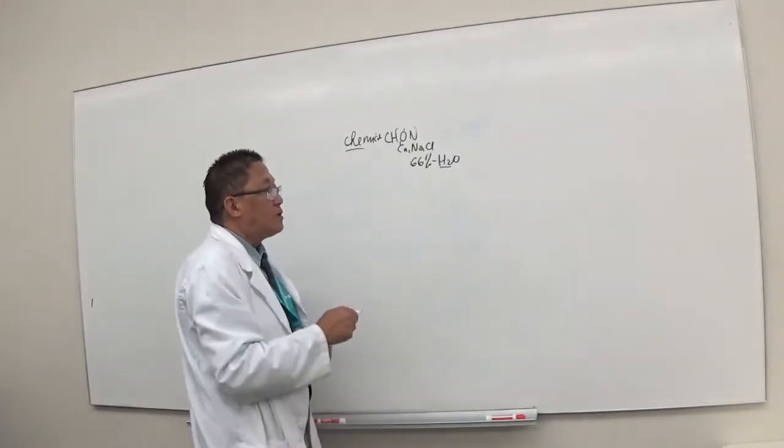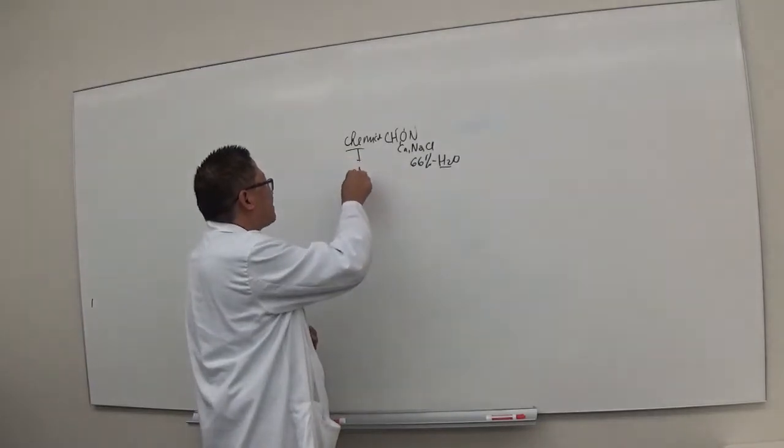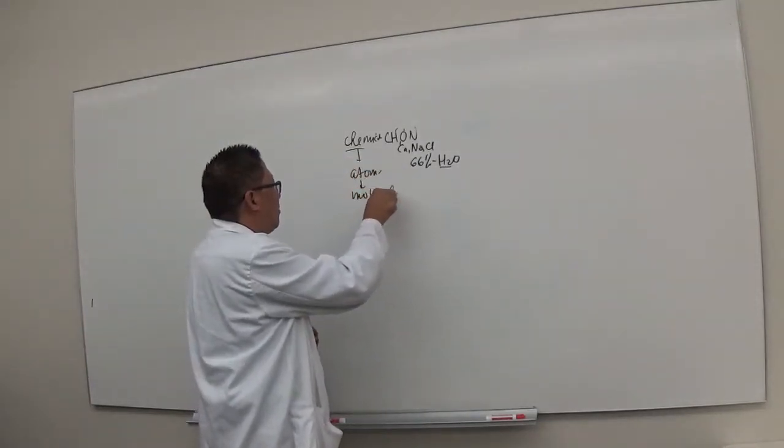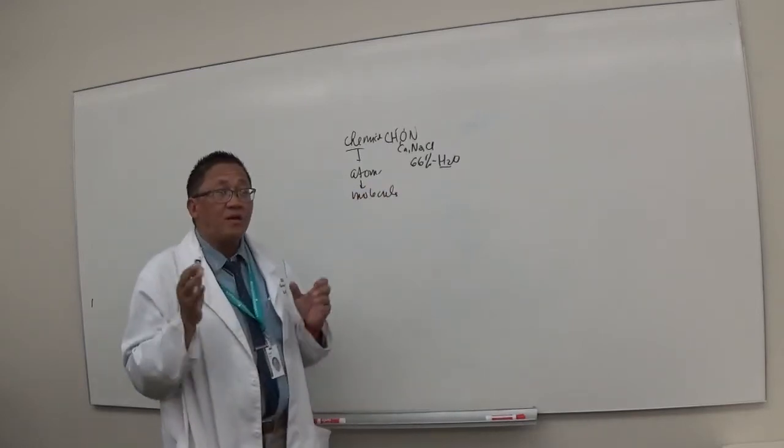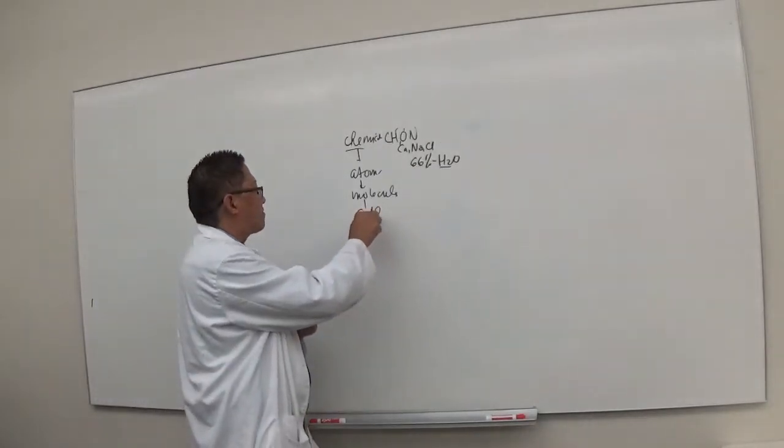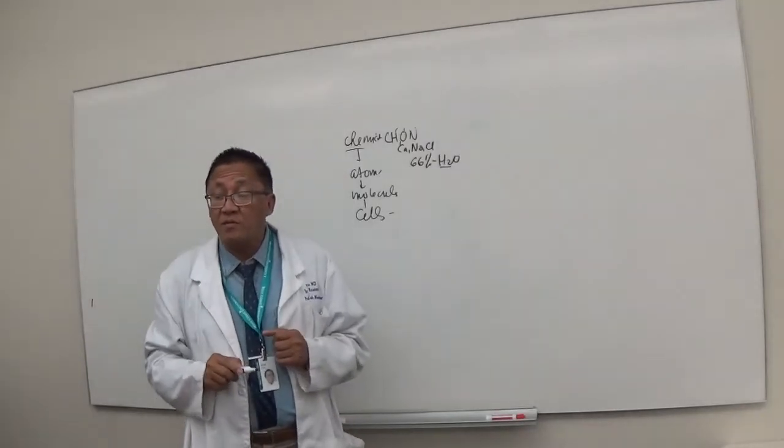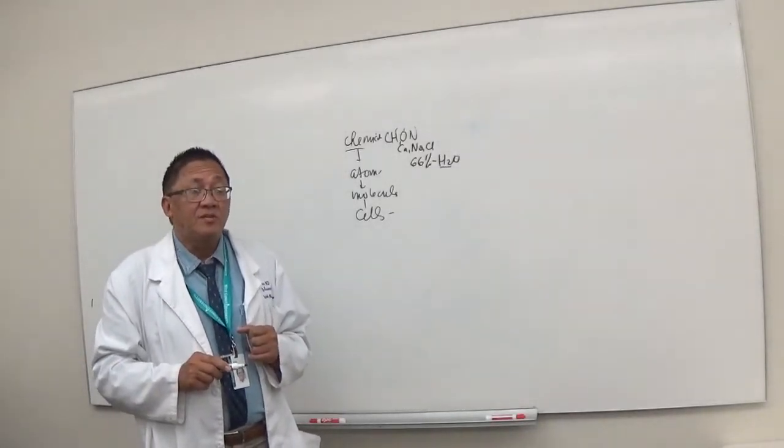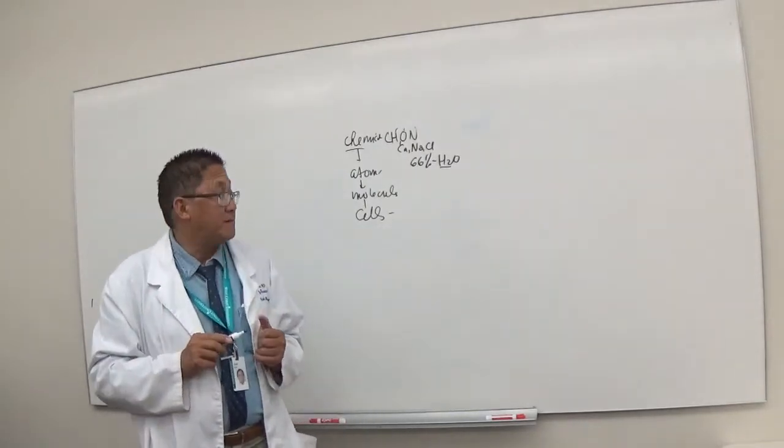So they form atoms, they form molecules, example would be water. And when they group together, what do they form? Cells, which are the basic structural unit of living organisms, be it plants or animals. So cells are important because they're the ones that are the basic unit of living organisms.